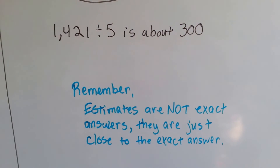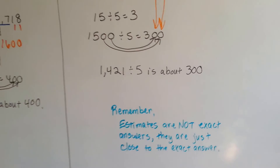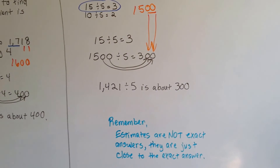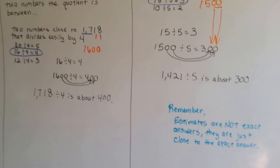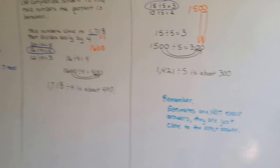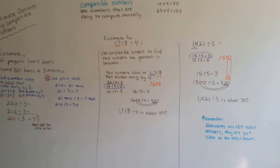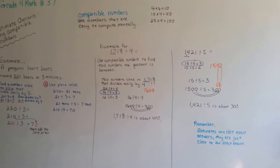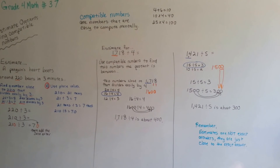Remember, estimates are not exact answers — they are just close to the exact answer. If someone said they want to know what it is and you don't have time to do the exact math, you can say it's around 300. At least you know it's not 100 or 900; at least you know it's around 300. So it's just an estimate, and you use the compatible number to help you get there. We're going to keep discussing division — I'll see you in the next video.